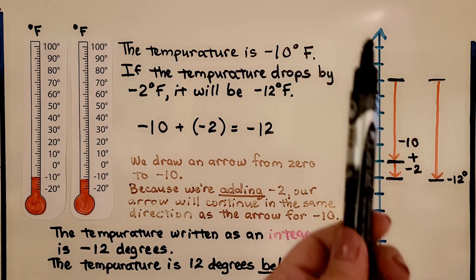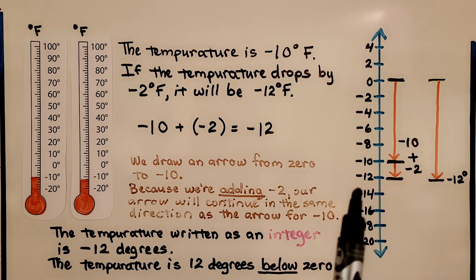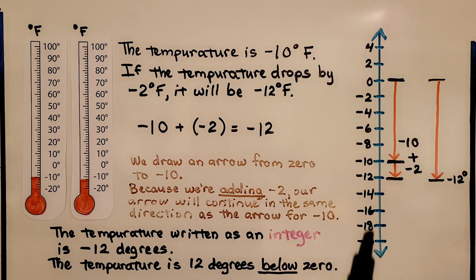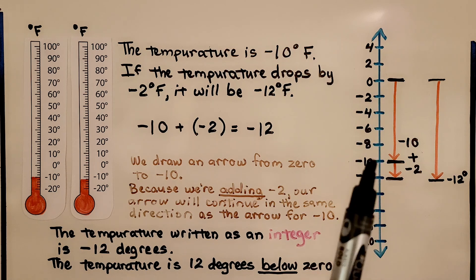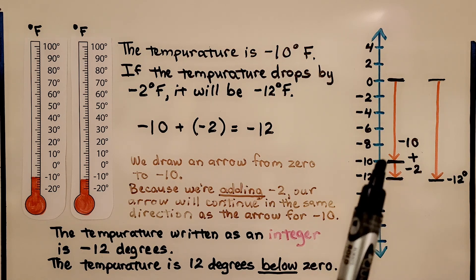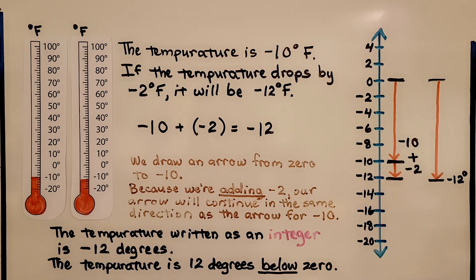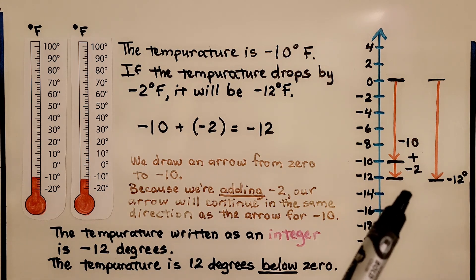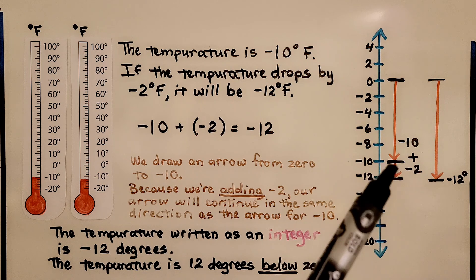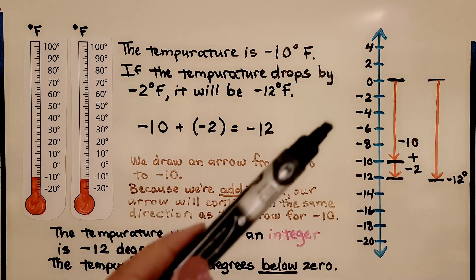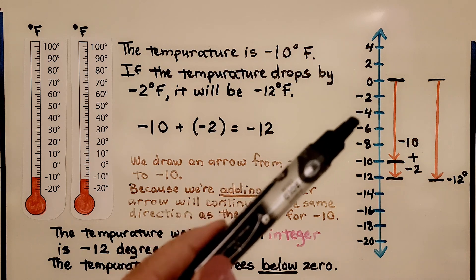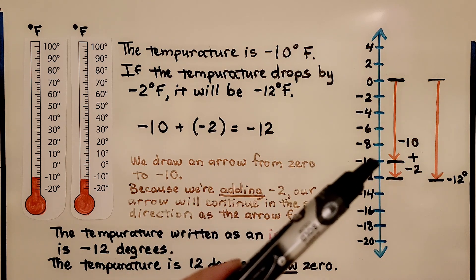On a number line, we can use a vertical number line, and remember on a vertical number line we number it on the left side. We draw an arrow from zero to negative ten, and because we're adding negative two, our arrow will continue in the same direction as the arrow for negative ten. So it's going to continue down two units. We're going to go down one increment.